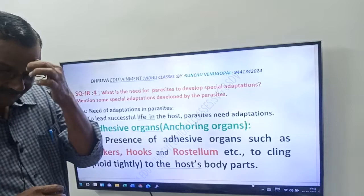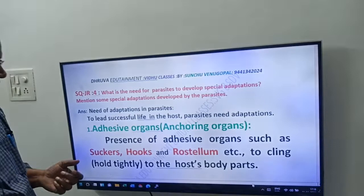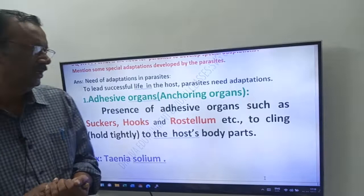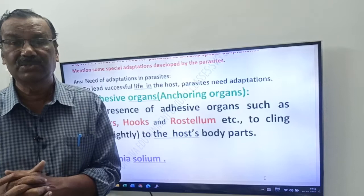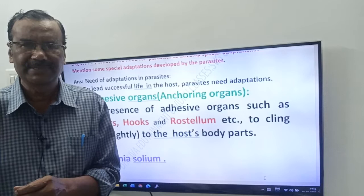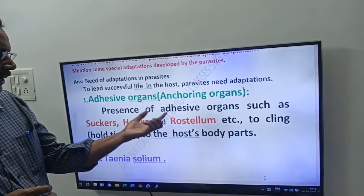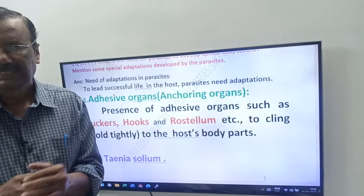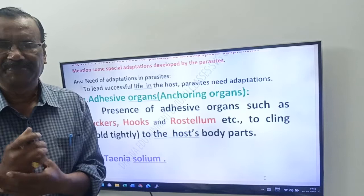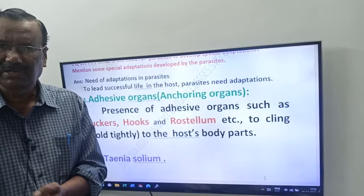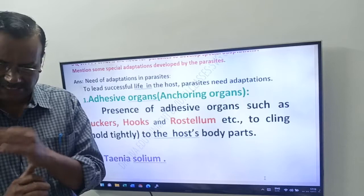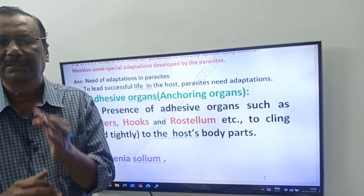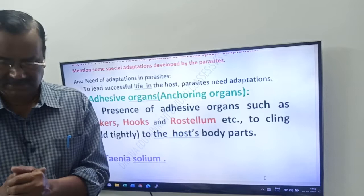Now we will see what those adaptations are. The first one is adhesive organs, also called anchoring organs. Presence of adhesive organs such as suckers, hooks, and rostellum — to cling to the host body parts, a parasite needs adhesive organs.